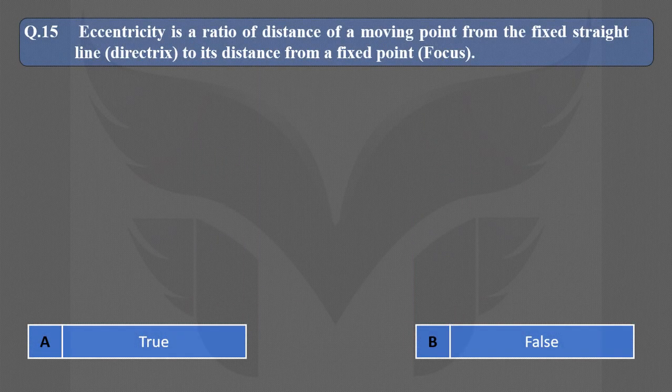Next question: Eccentricity is the ratio of the distance of a moving point from the fixed line (directrix) to its distance from a fixed point (focus). Is this statement true? No, it is false. If you read it carefully, this is actually the inverse of eccentricity. So this statement is not correct to define eccentricity.